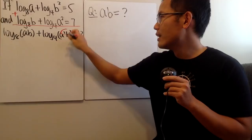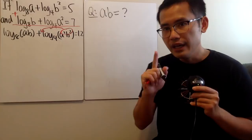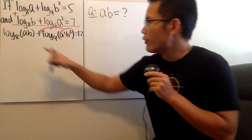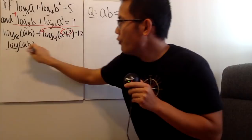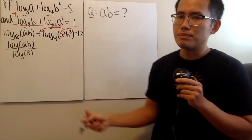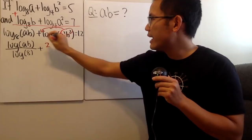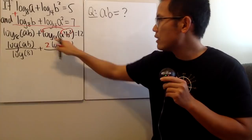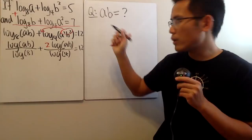Both of them have power 2, so we can bring the 2 to the front. In the meantime, I will also use the change of base formula. For this, I will write down regular log of AB over log base 8. This log can be whatever you want, but I will just use the regular log. I will put the 2 in front, and then on top we have log of AB over log base 4. That's still equal to 12.